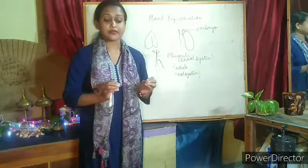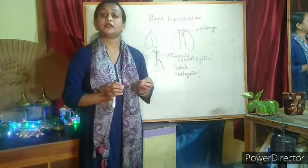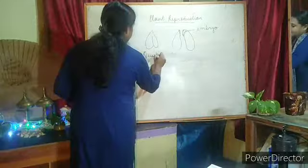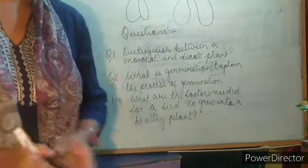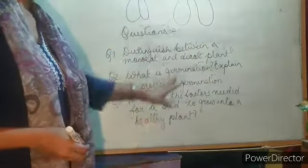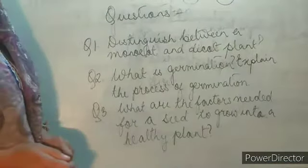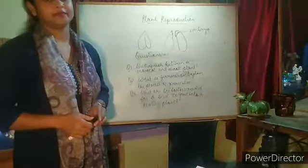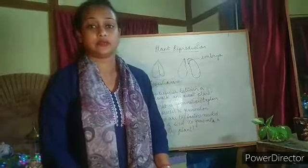In the absence of any one of these factors, the seed will not germinate or it will die. With this, we come to the end of today's session. For your assignment, I hope after going through the video and the pictures provided, you will be able to answer these three questions: First, distinguish between a monocot and dicot plant. Second, what is germination? Explain the process of germination. Third, what are the factors needed for a seed to grow into a healthy plant? Thank you, and next we will take up another topic.